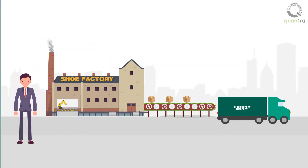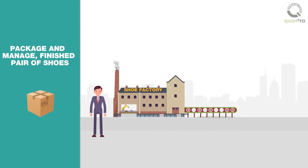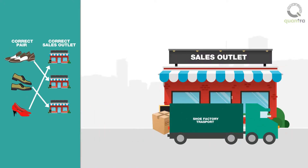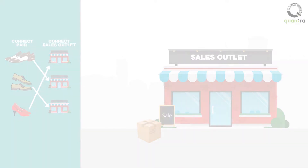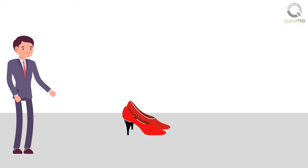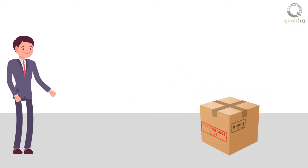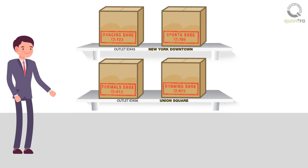Suppose you are working in a shoe factory and your job is to package and manage the finished pairs of shoes. Since each pair is unique, you have to make sure the correct pair reaches the correct factory sales outlet. As an efficient manager, once you get a new pair, you pack them in the shoebox and stamp a unique identification name to it. To make sure it reaches the correct outlet, you place them in their respective storage racks.